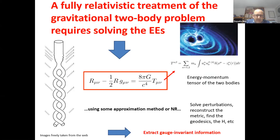To discuss the relativistic two-body problem, one must solve Einstein's equations sourced by the energy-momentum tensor associated with the two bodies, which is a Dirac delta singular along their worldlines. This makes the problem very difficult to solve unless one uses some approximation method or numerical relativity. In principle, one introduces a perturbation to the metric, solves the perturbation equations, reconstructs the metric, finds geodesics, converts to the Hamiltonian, and extracts gauge-invariant information.